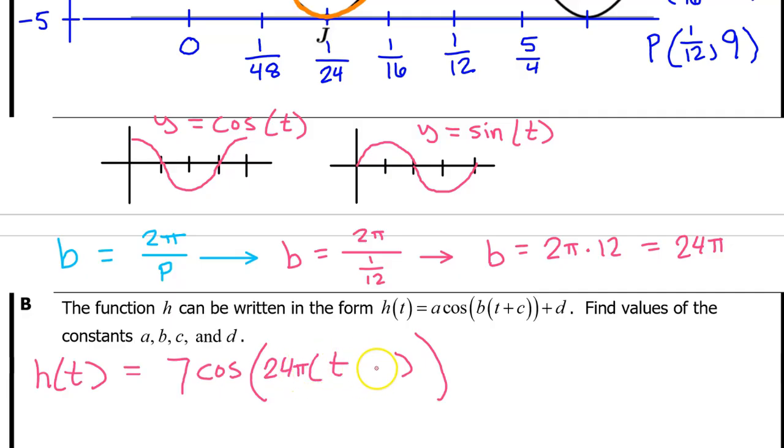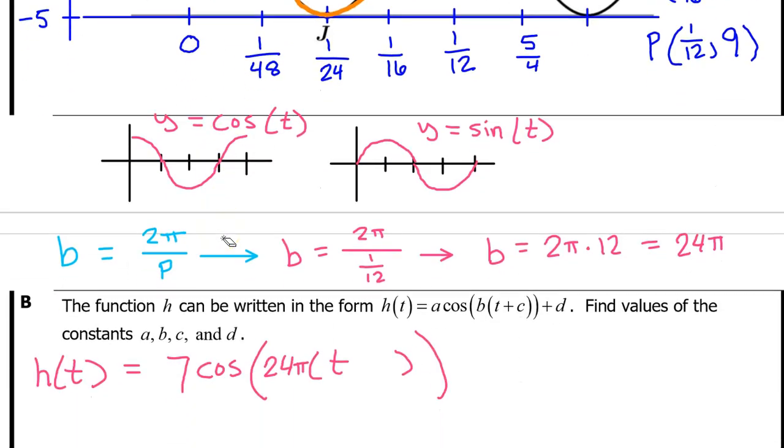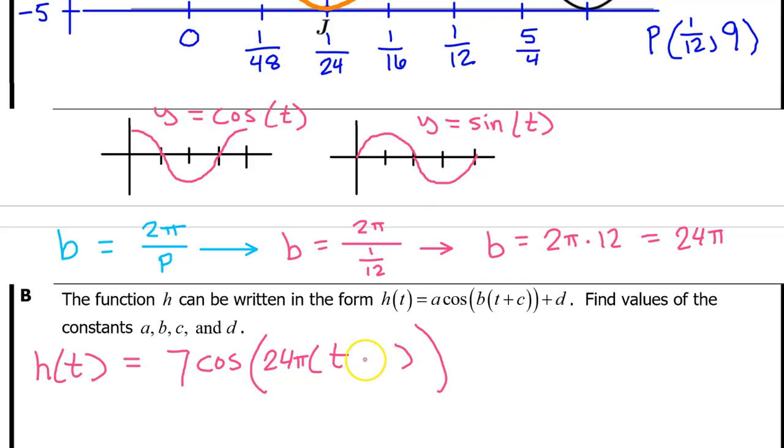Next is the c value. The c value is the opposite of the phase shift, which is the input value of the beginning of the period that you're focusing on. Since this period that we are using begins at 0, the phase shift will be 0. Normally, I would say the opposite of this value. Like, let's say this had been 2. Then the phase shift would be 2, so therefore the c value would be negative 2. But negative 0 is still 0. So the c value is simply 0, which you don't actually need to write in here, but I'm going to put it plus 0.